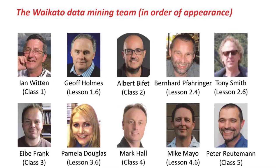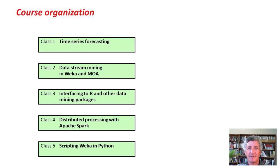This is the team — the WEKA people at Waikato. You'll meet all of these people as we go through the lessons in this course. The course is organized just like the other courses: there are five classes, each corresponding to about a week. The first class is on time-series forecasting, then data stream mining, interfacing to R, distributed processing, and Python scripting.